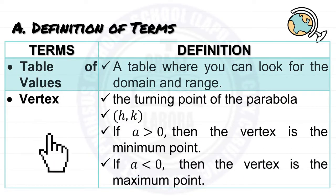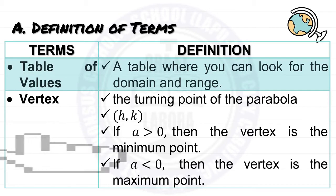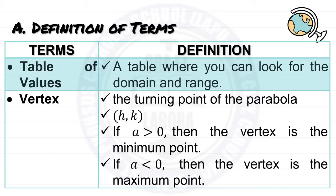Next is the vertex. The vertex is the turning point of the parabola, having the ordered pair (h, k). If a is greater than zero, then the vertex is the minimum point. But if a is less than zero, then the vertex is considered the maximum point.